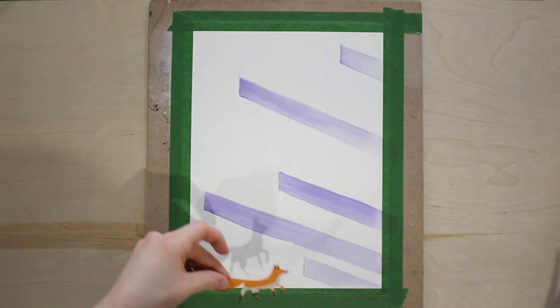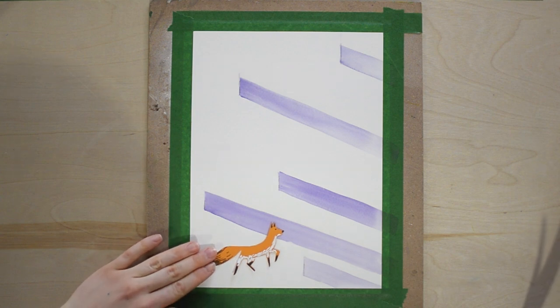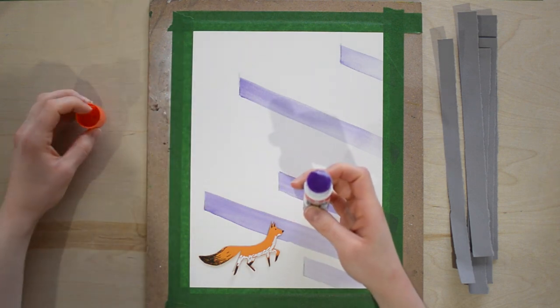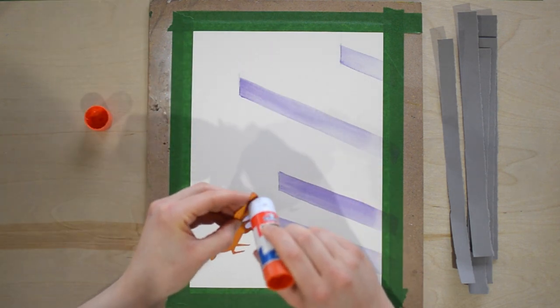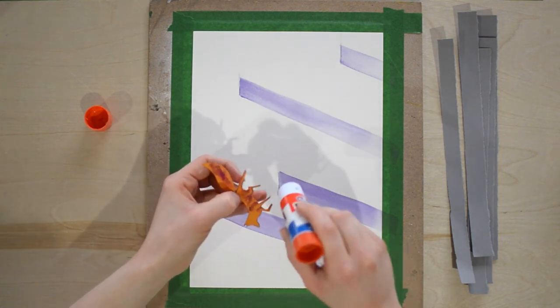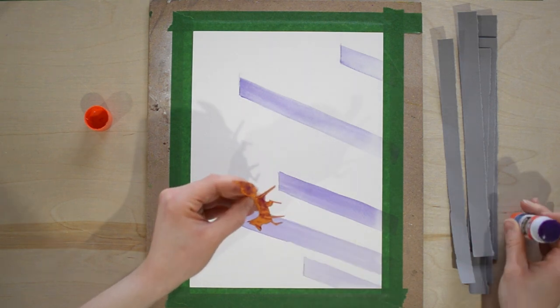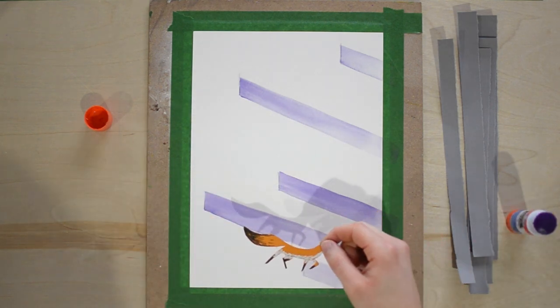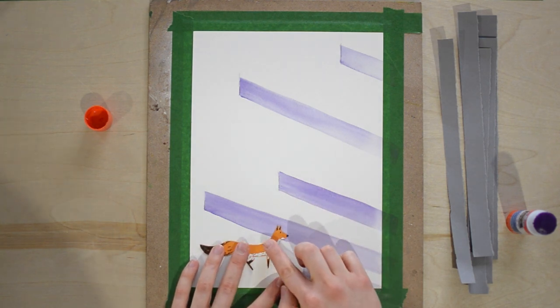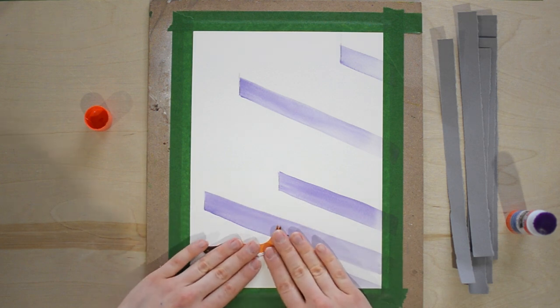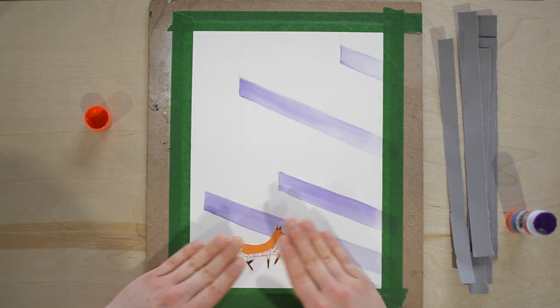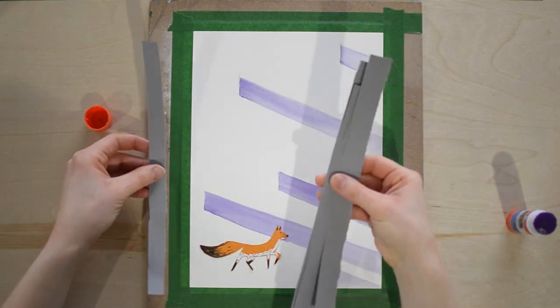Our paper should be dry and we can go ahead and glue our fox. Go ahead and take your glue stick and apply the glue to the back of the fox. I love this purple glue because you can see where you're putting it and it will dry clear, which is really awesome. I want to put my fox at the bottom here. You don't have to. If you want to put your fox in a different spot, that's great. You just don't want it to be on top of any of the shadows where they start because that's where our trees are going to go.